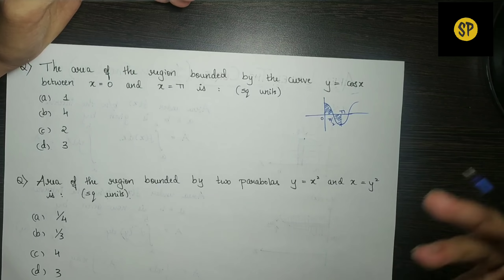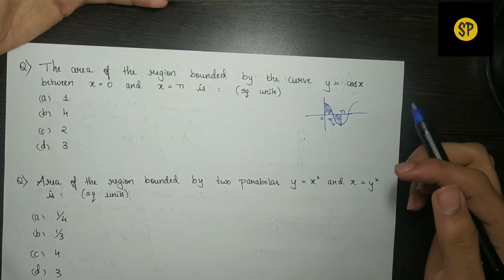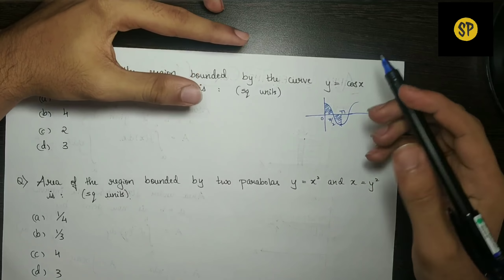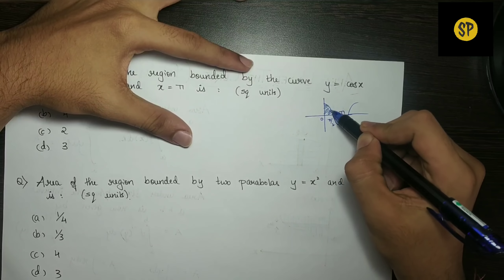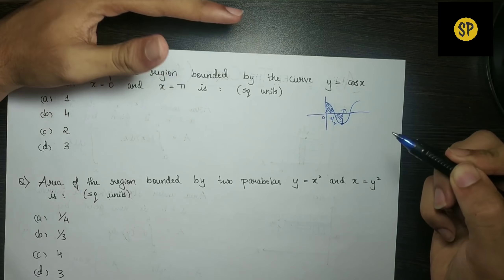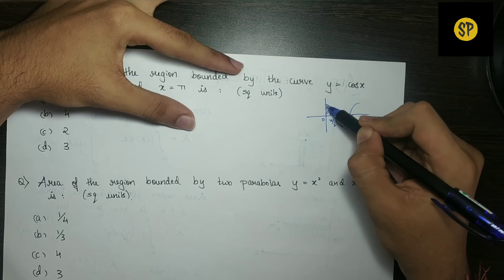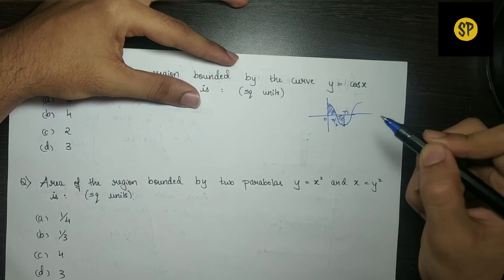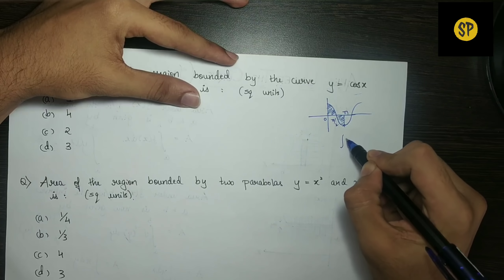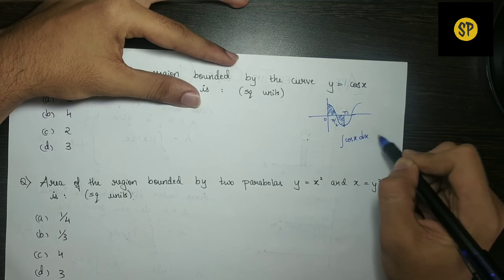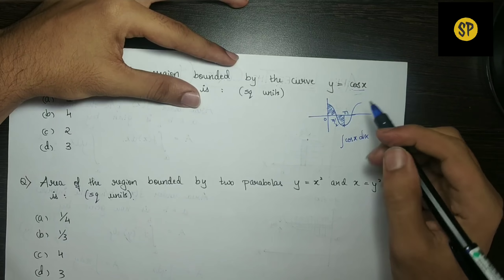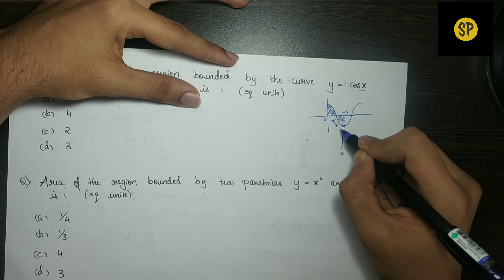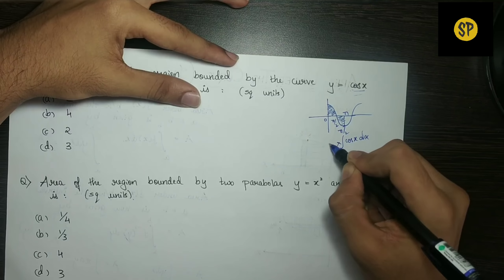But logically, the area can never be negative. So if we need to consider the full area, we take the positive part and double it. We compute 2 into the integral of cos x dx from 0 to pi by 2 to get the total area. This is the correct approach.